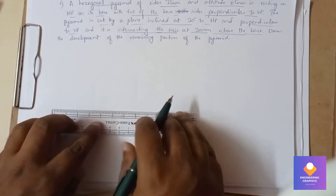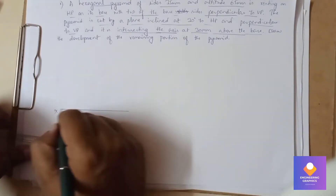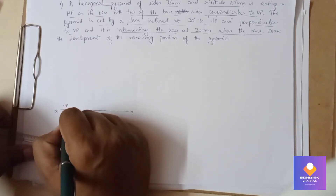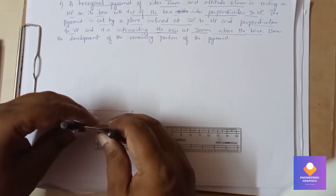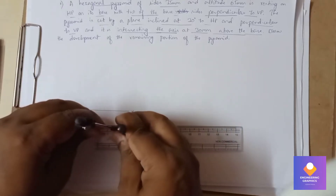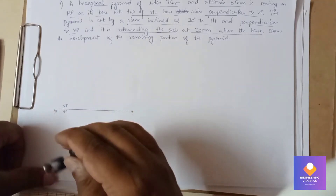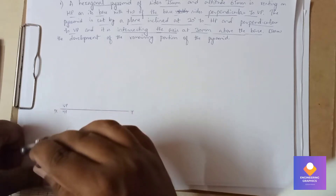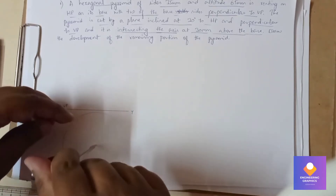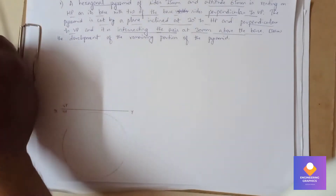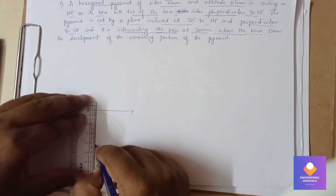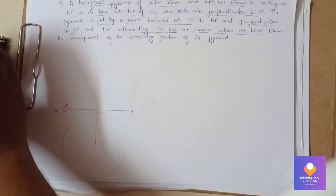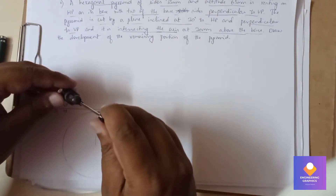First, I'll construct the XY line. Using the circle method, I'll construct a hexagon. The dimension to measure is 35mm, that is 3.5cm. Using a scale and compass, I'll construct a circle, then draw a vertical line from the center point as the radius. With 35mm set on the compass, we need to cut six arcs.